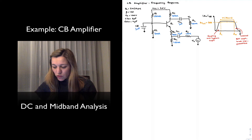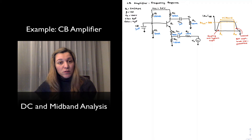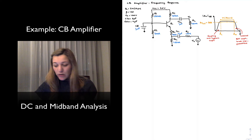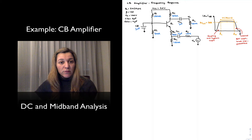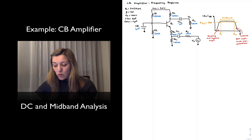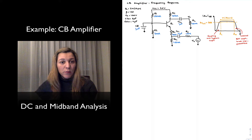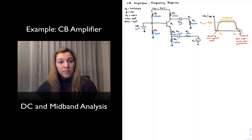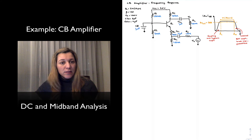I have also drawn the standard frequency response for a transistor amplifier, and it resembles the frequency response of a bandpass filter. It has a low cutoff frequency, which is determined by coupling and bypass capacitors, as well as a high cutoff frequency FH, which is determined by the internal transistor capacitances, parasitic load capacitances, etc.